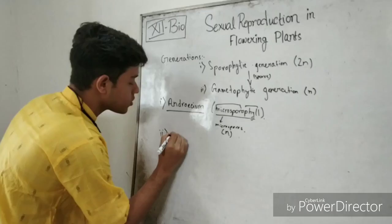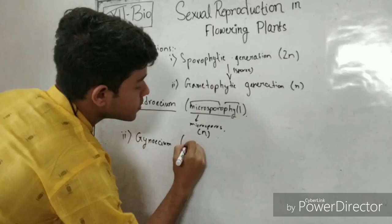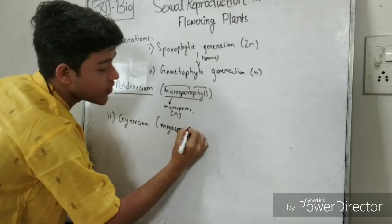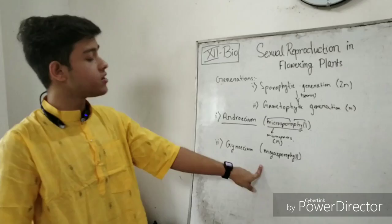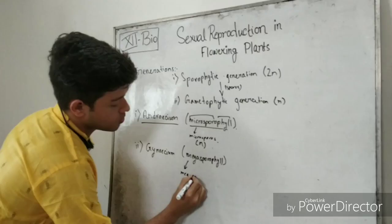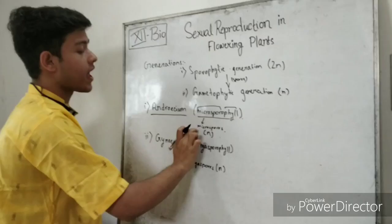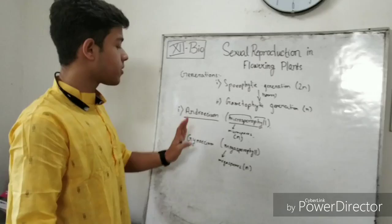And the next whorl we talked about is the gynoecium, or the megasporophyll — you guessed it — 'phyll' meaning the modified leafy structure that contains parts that produce the megaspores. Megaspores are larger in size than the male spores, and hence the name megaspores. Let us now talk about the microsporophyll, or the androecium.